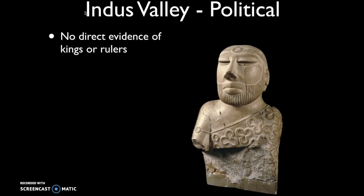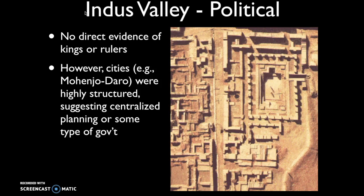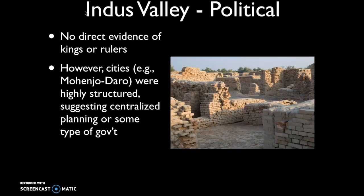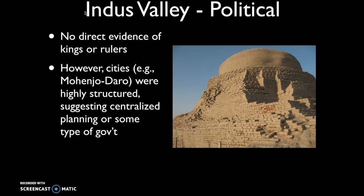We have no direct evidence of kings or rulers and don't know a lot about their government structure, since there's no textual evidence to definitively determine whether there were kings or what kind of government they had. However, we can identify that the Indus River Valley people most likely had some form of centralized planning, because their cities were highly structured: streets were of uniform width and formed at right angles to one another. The fact that all bricks are a uniform size also suggests centralized authority.